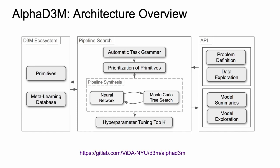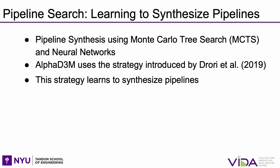In the first module, AlphaD3M uses the strategy introduced by Drori et al. to synthesize machine learning pipelines. It is based on a single-player game technique inspired by AlphaZero. It applies model-based reinforcement learning with a neural network sequence model and Monte Carlo Tree Search. An important benefit of this strategy is that it learns to synthesize competitive pipelines.